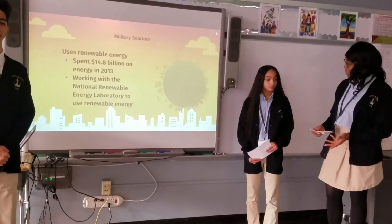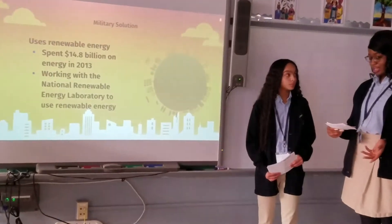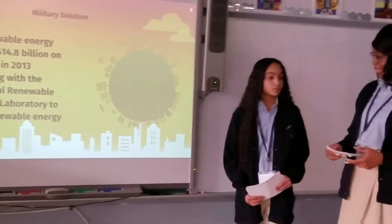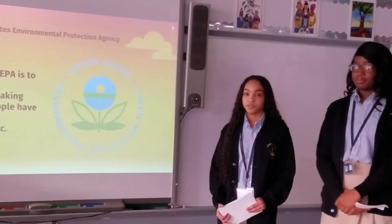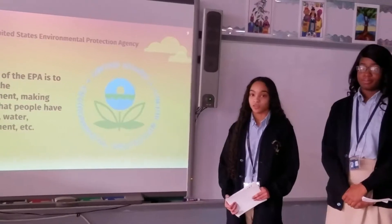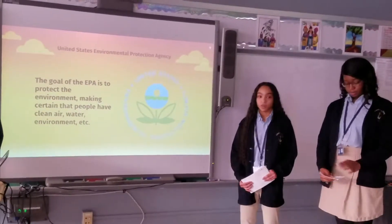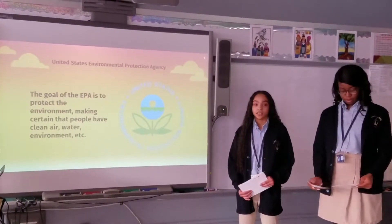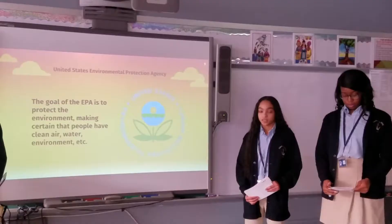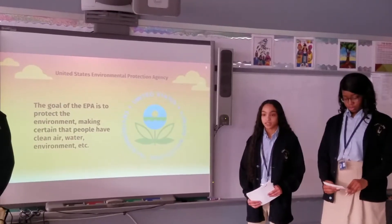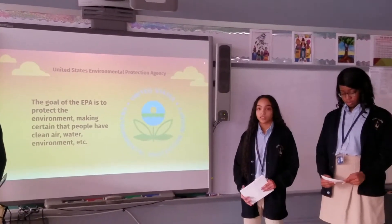How is the government working to fix the issues of global warming? The Environmental Protection Agency is an independent agency of the United States federal government. They aim to provide clean air, clean water, and a clean environment for the citizens of the United States through the laws they enforce.